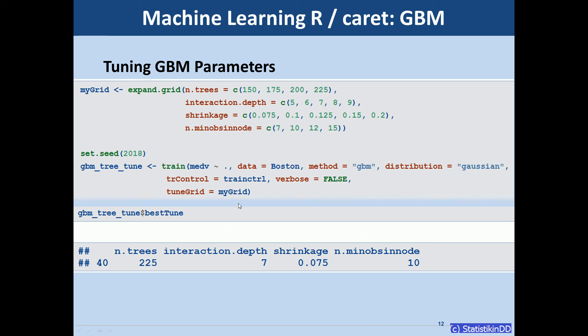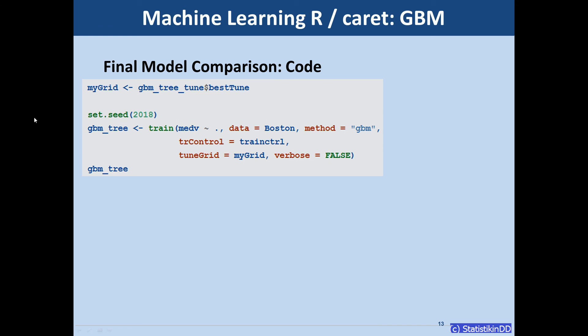So now we're really keen to see how the new model with these parameters will perform compared to the random forest model that our colleague created. So we use a grid again. But this time we only use the best tune.